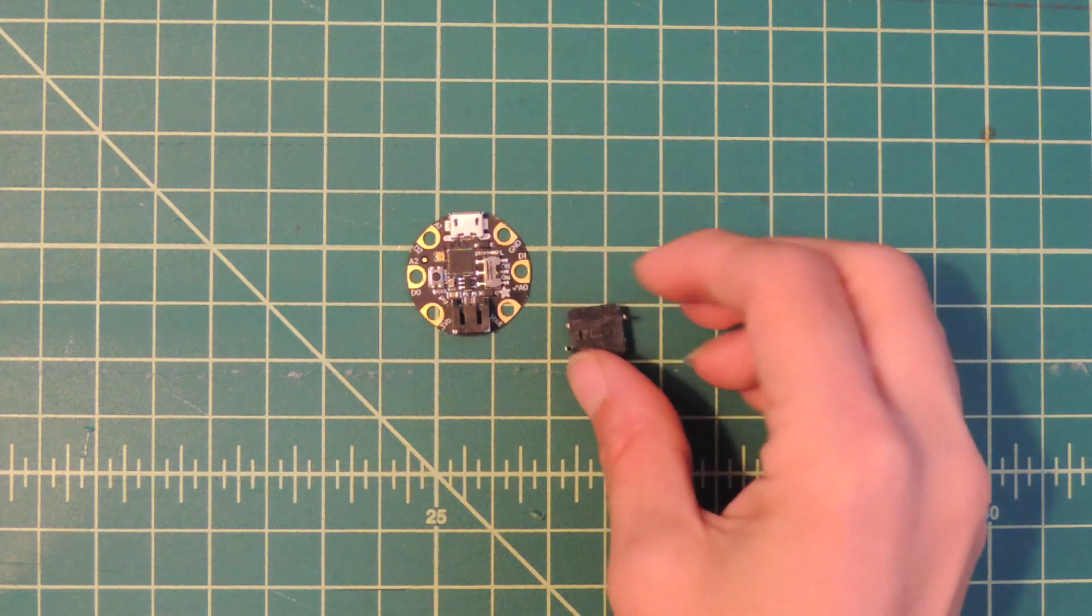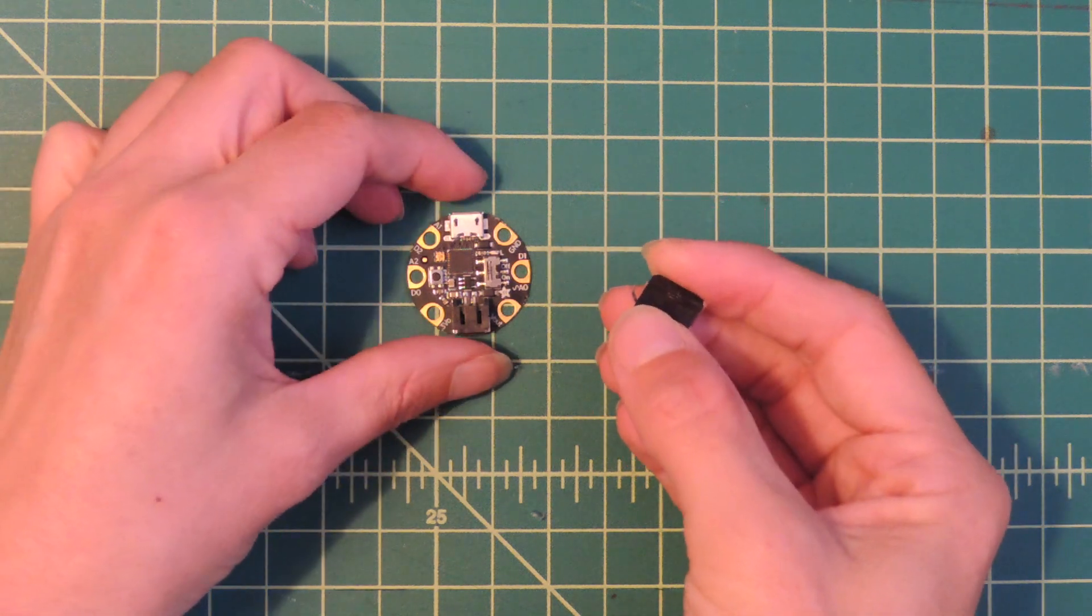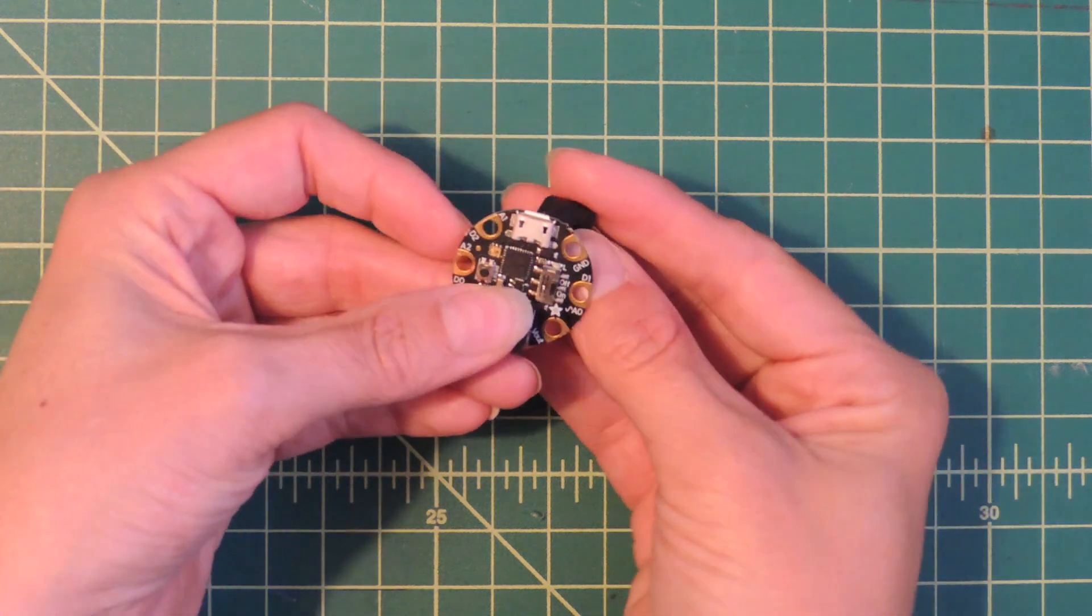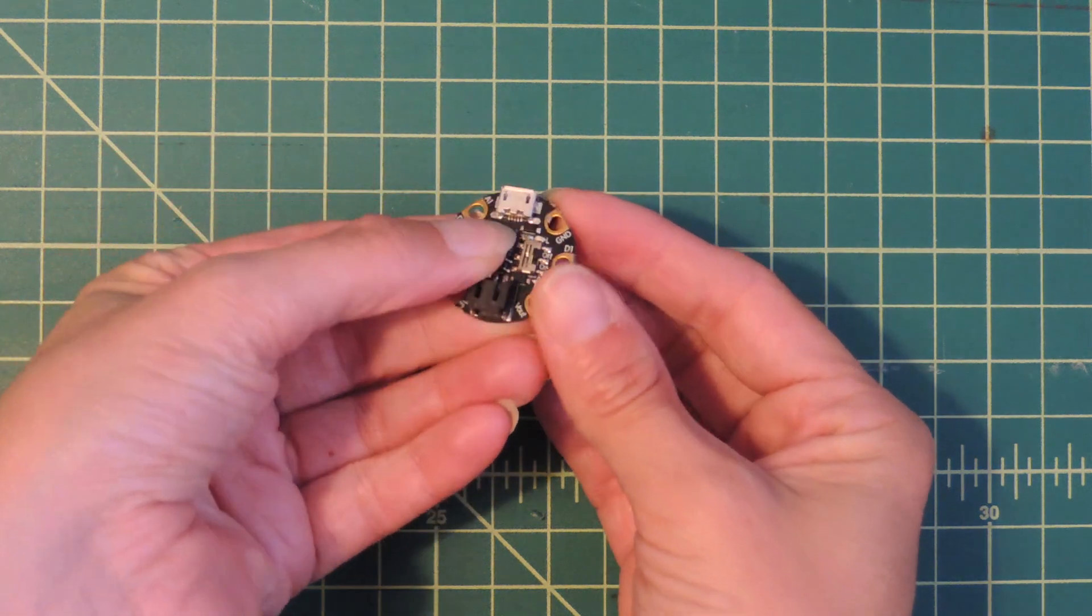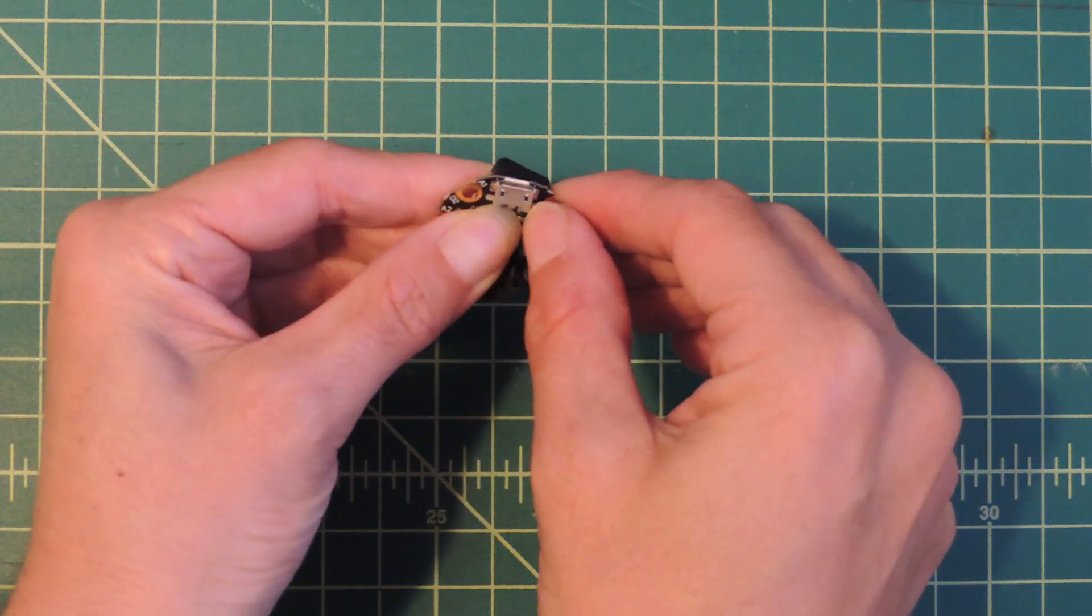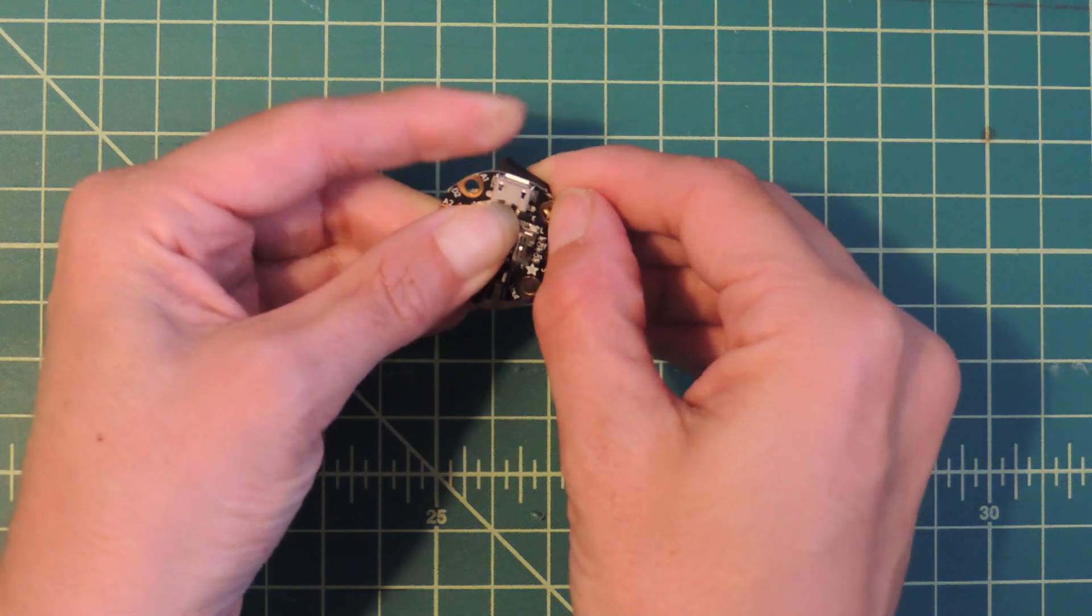Add a fun clicky button to showcase some of the beautiful animations and pick a brightness setting. Since we only have one pin left on the Gemma M0, we'll have to make it work. A short button press will select a mode and a long press will select brightness.